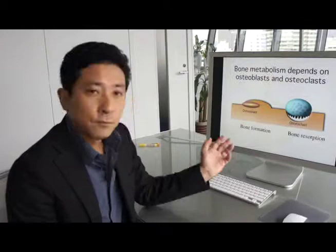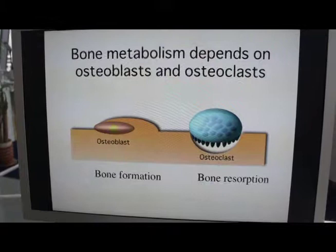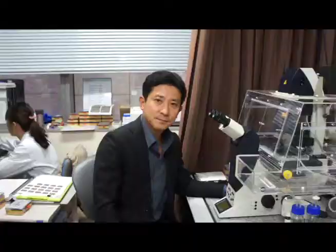Bone metabolism depends on the osteoblastic bone formation and osteoclastic bone resorption. The balance between the formation and resorption is very important for the normal maintenance of the bone tissue. Osteoclastic bone resorption is involved in many bone and joint diseases, like osteoporosis, rheumatoid arthritis, and tumor-related bone destruction.